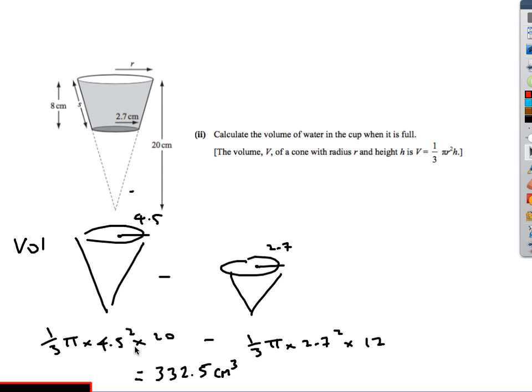Okay, so we basically put those values in. We know that the length of the big cone, the height rather, is 20. And we know that radius is 4.5. So this is the volume of the big cone, the volume of the small cone. Well, again, we know that this is 12 from the previous question. So we do 1 third pi times 2.7 squared times 12. Volume of the big cone, take away volume of the small cone. What must be left is the shaded region, so 332.5 centimeters cubed.